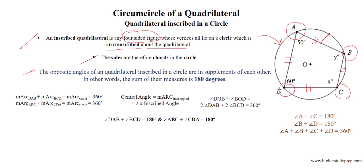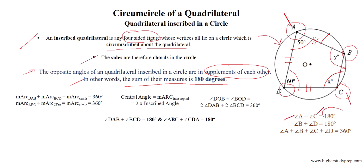The hypothesis for the circumcircle of a quadrilateral is that the opposite angles of a quadrilateral inscribed in a circle are supplements of each other — that is, their sum is 180 degrees. Therefore, angle A plus angle C equals 180 degrees, and angle D plus angle B equals 180 degrees. The sum of all angles in a quadrilateral equals 360 degrees.